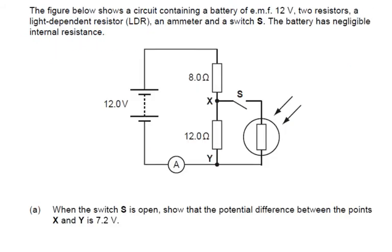The figure below shows a circuit containing a battery of EMF 12 volts, two resistors, a light dependent resistor, an ammeter and a switch. The battery has negligible internal resistance. When the switch is open, show that the potential difference between the points X and Y is 7.2 volts. So firstly let's work out the current, or we could use the potential divider equation. In fact, why don't we do that?